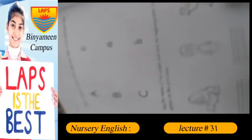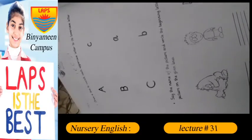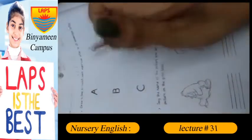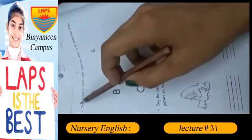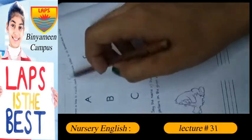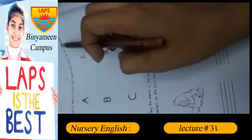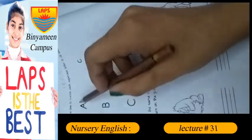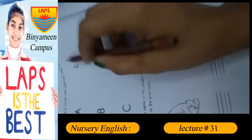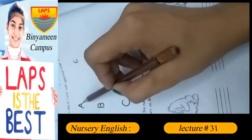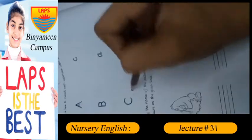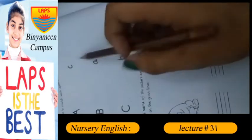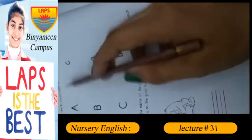Assalamualaikum, here is lecture number 31 for the prep class — English class. Draw a line to match each uppercase letter to its lowercase letter. Here is my uppercase letter and here is my lowercase letter. Uppercase letters: A, B, and C. Lowercase letters: A, B, and C.